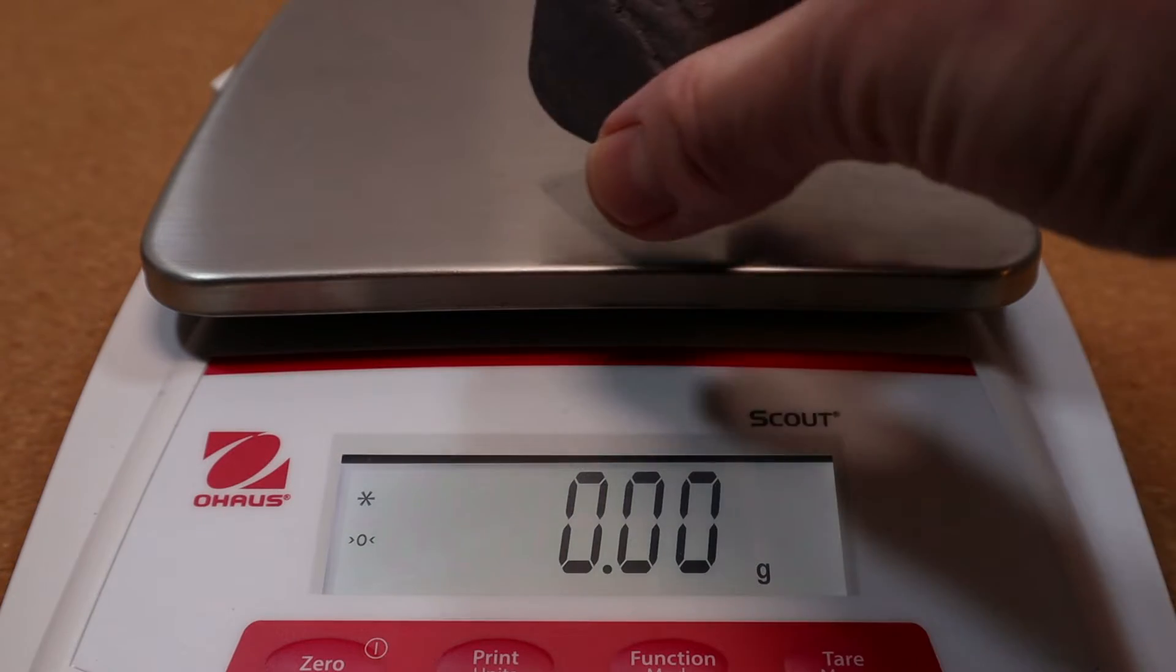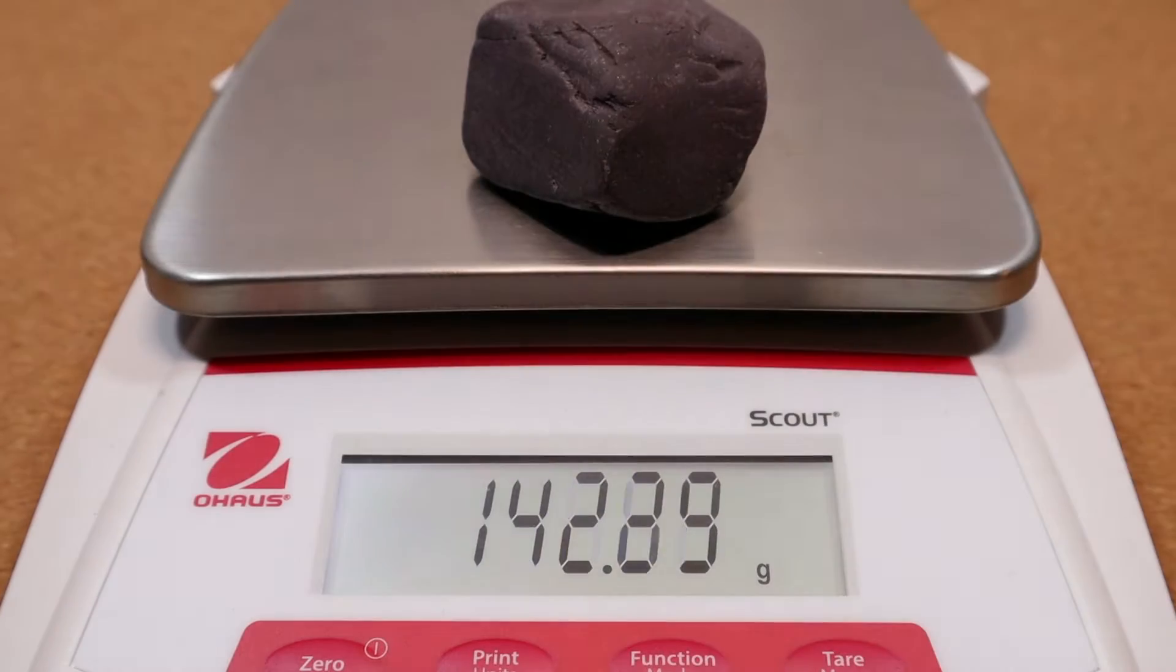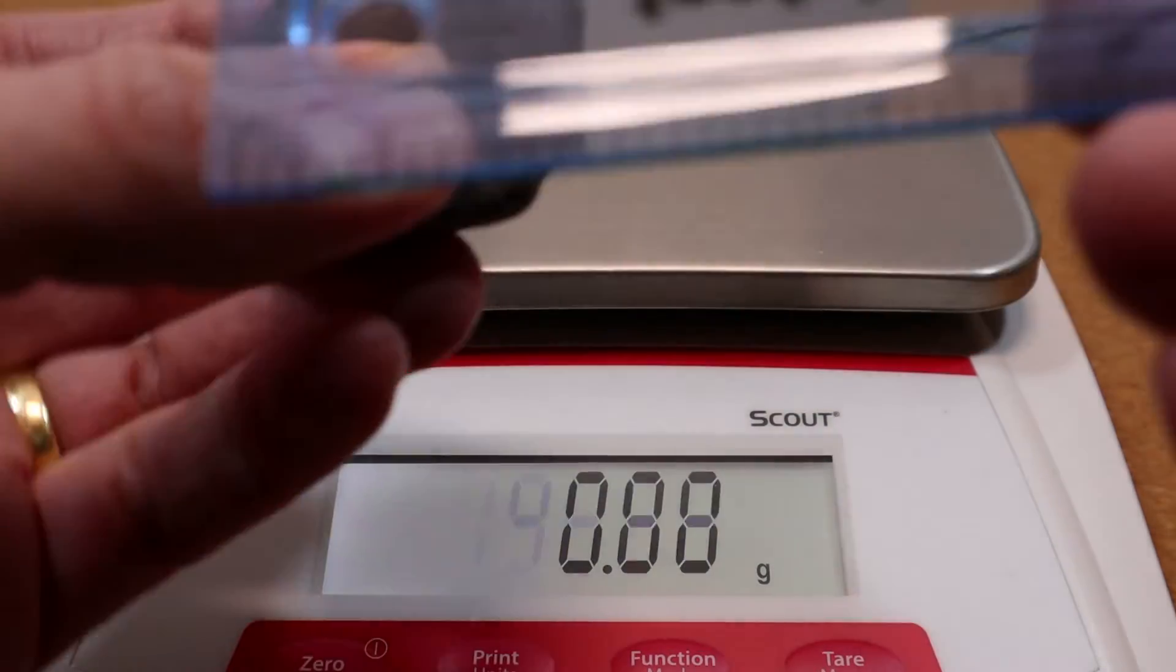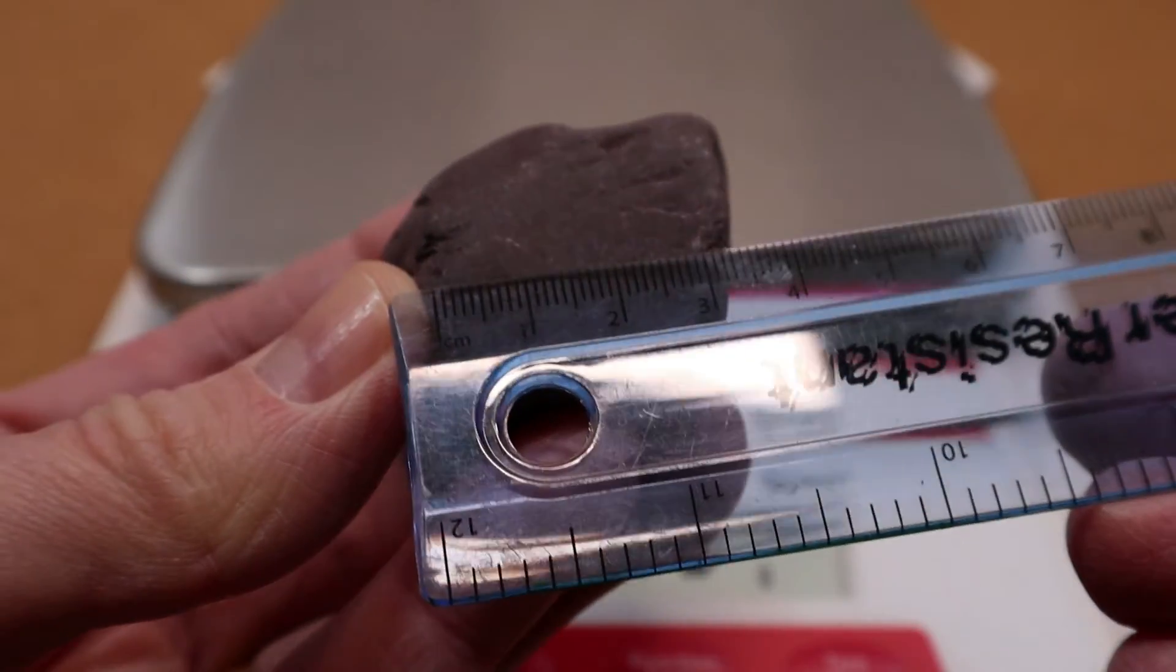Measuring the mass of the stone is just as simple as it was before. Just pop it in the electronic balance and then you're done. The question is though, how do we find the volume of the stone?